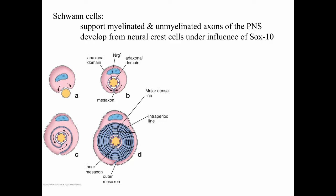Now jumping to the peripheral nervous system, I want to talk about Schwann cells and myelination on axons in the peripheral nervous system. Schwann cells develop from the neural crest, under the influence of the SOX10 genes. The Schwann cells do come from neural crest cells and are under the influence of SOX10.